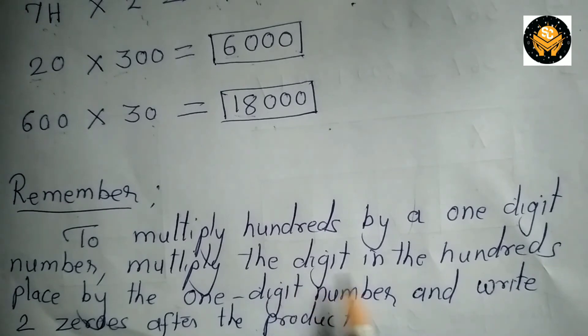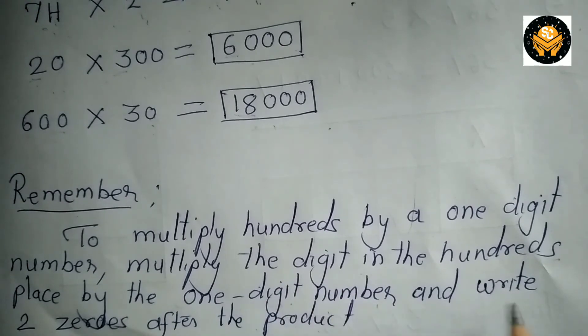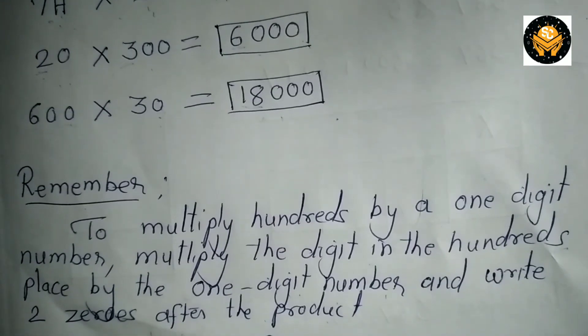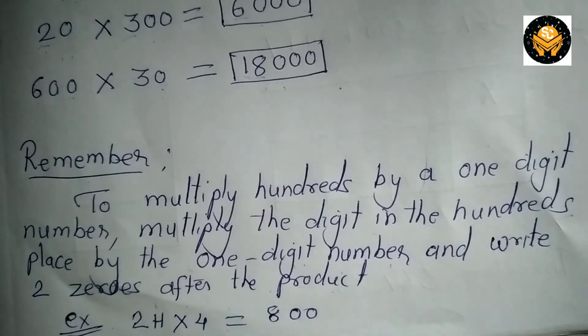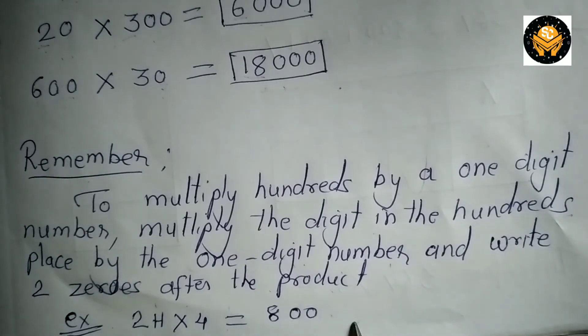To multiply hundreds by a 1 digit number, multiply the digit in the 100 place by the 1 digit number and write 2 0s after the product. For example, 2H multiplied by 4 is 800.